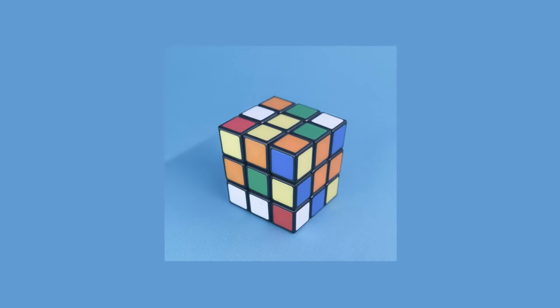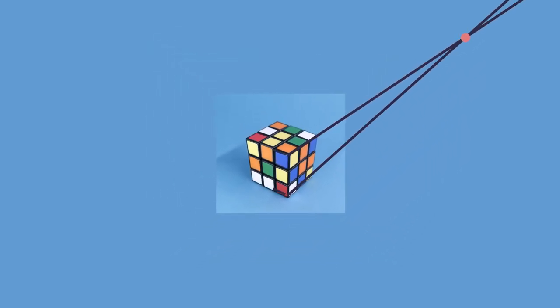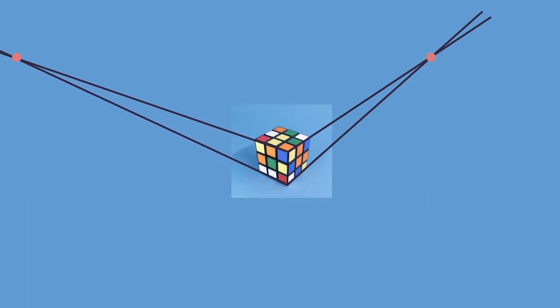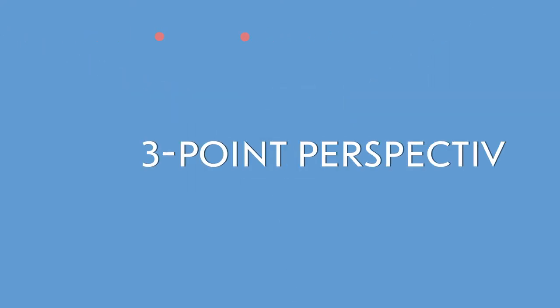There is also a third kind of perspective, often used in ID sketching. When the cube is at an angle to us, the horizontal edges, as in angular perspective, converge and meet at the first and the second point. And the vertical edges, moving away, also converge and eventually meet. This is called three-point perspective. If you look at a high building like a skyscraper, you will see three-point perspective. In industrial sketching, this type of perspective can be used to exaggerate the 3D effect.